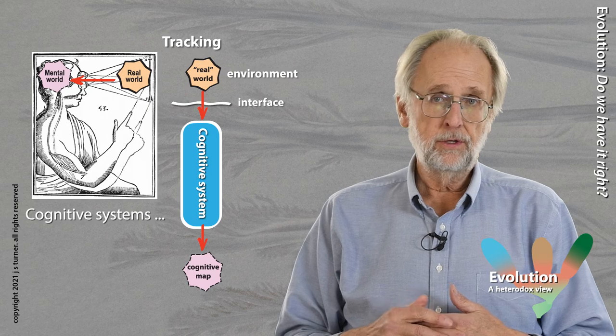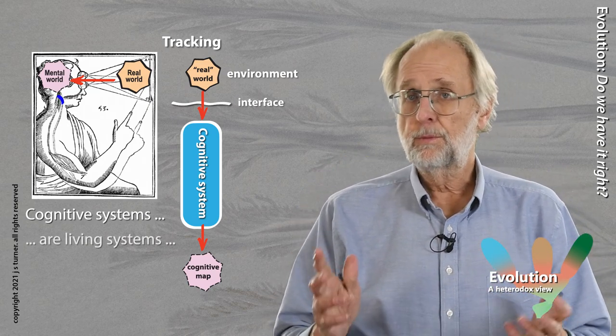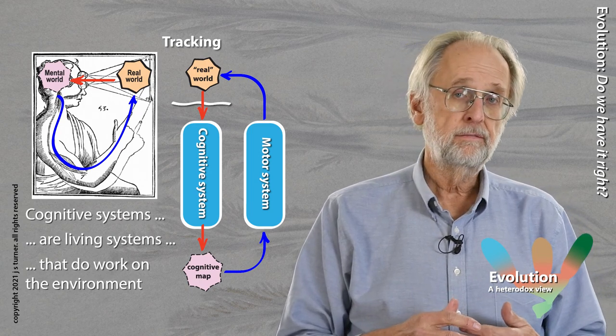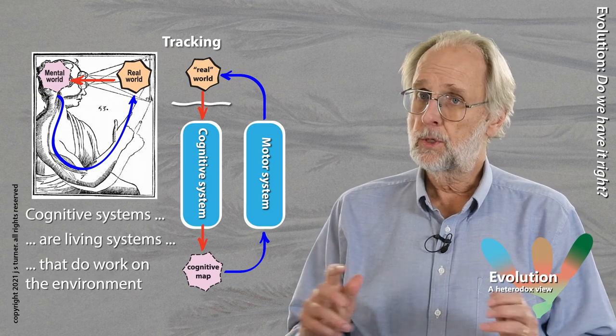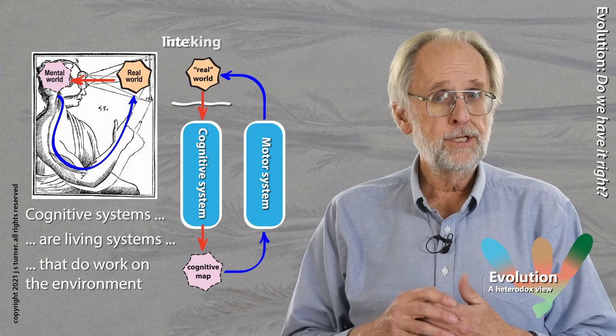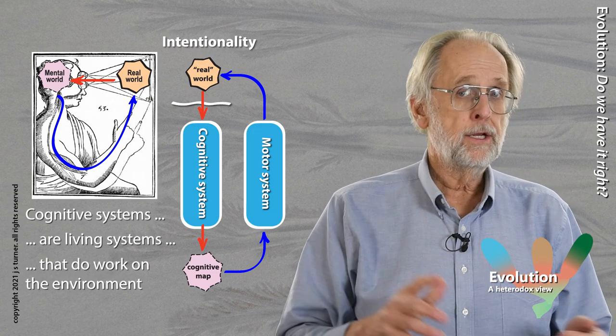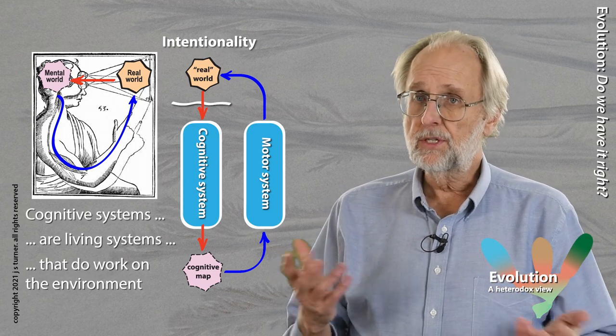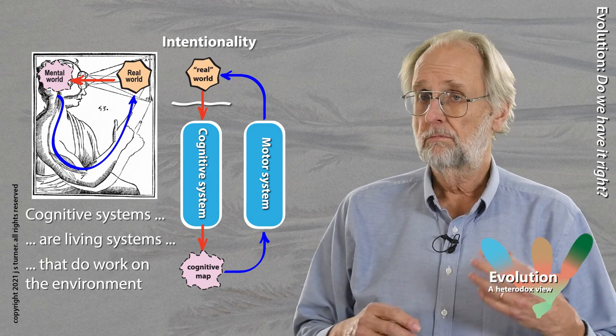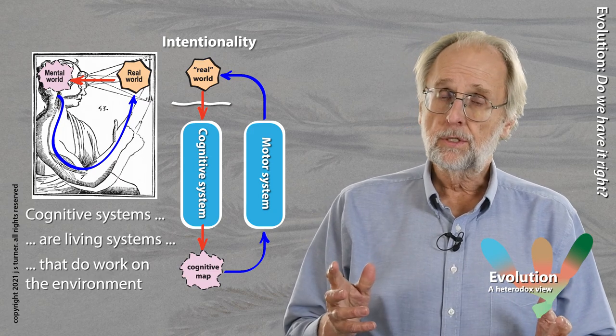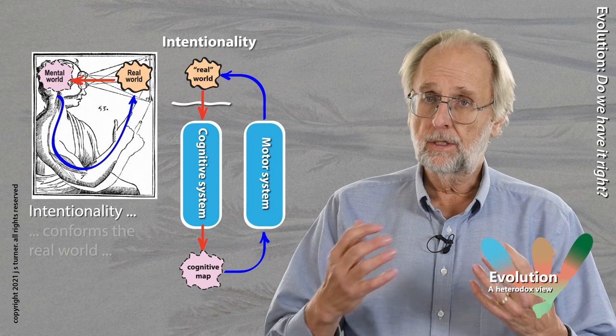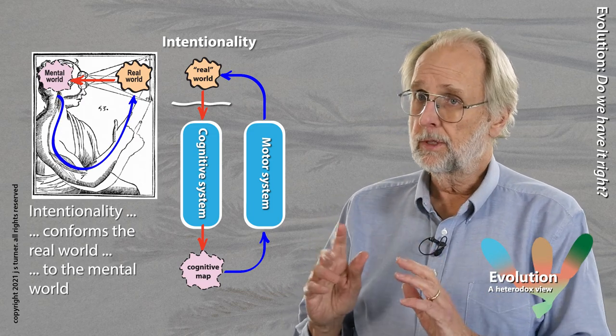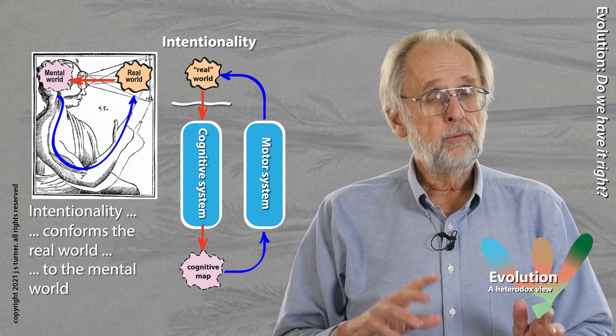Cognitive systems never exist on their own, in a medium of pure mentality, if you will. Cognitive systems are always coupled to some kind of living engine that can do work on the real world, on the environment. That's the nature of life, of the extended organism. And we can call this a motor system. Out of this coupling comes intentionality as a fundamental feature of cognitive systems, applicable to all living beings, no matter how simple. If there's some disagreement, some disconformity between the mental representation of the real world and the real world itself, instead of tracking the real world, the motor system can get to work on the environment to bring the real world into conformity with the mental world. The opposite of tracking, essentially. Now it's the mental world that creates the real world in its image. And it's a short hop from there to creativity.